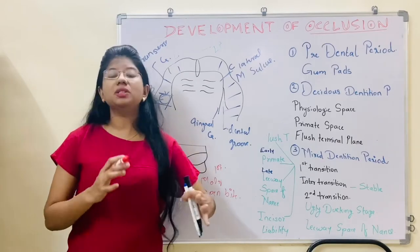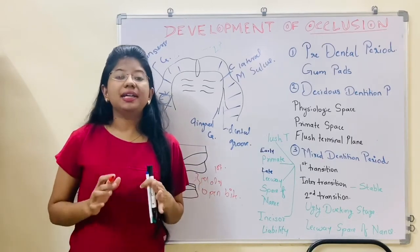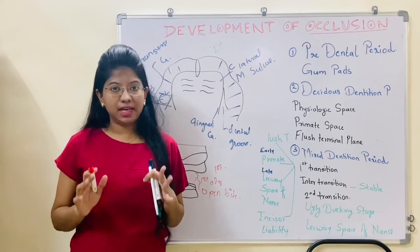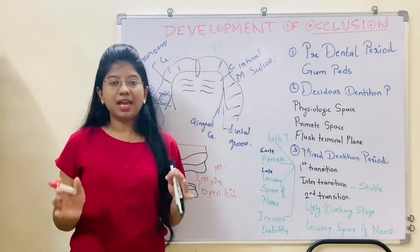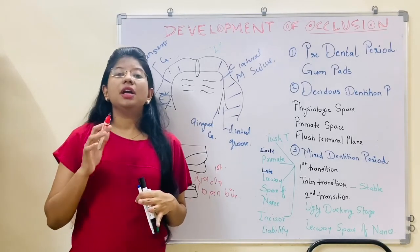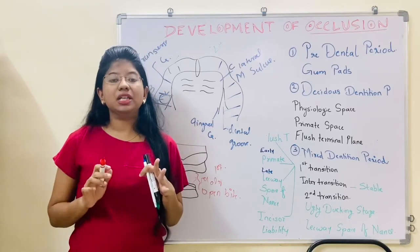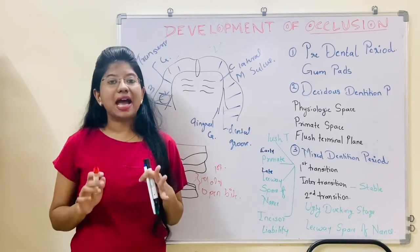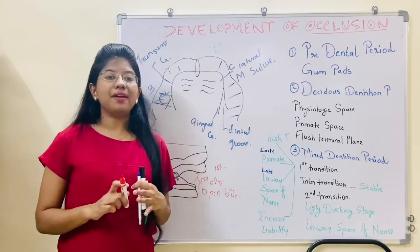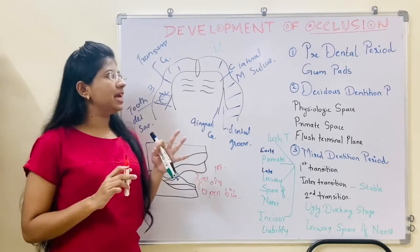Some children have teeth at the time of birth; these are called natal teeth. If teeth erupt within the first month of age, they are called neonatal teeth. This concludes the pre-dental period.